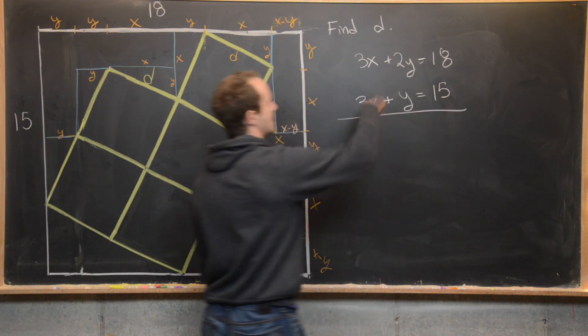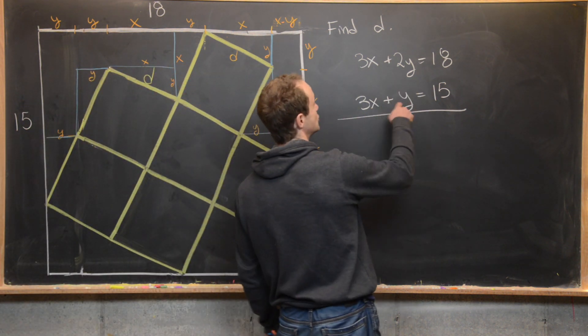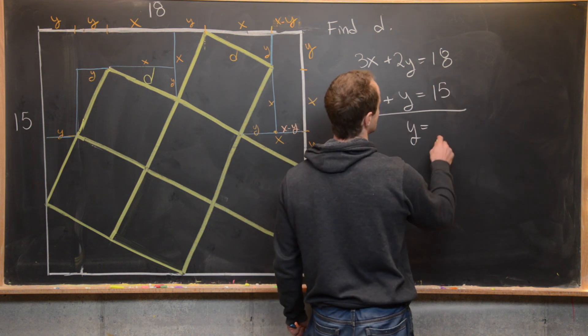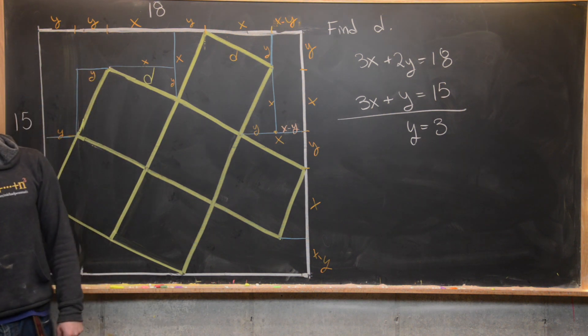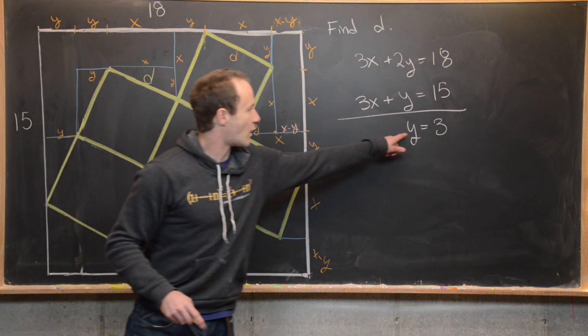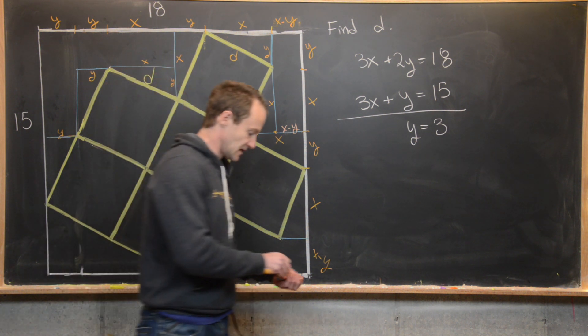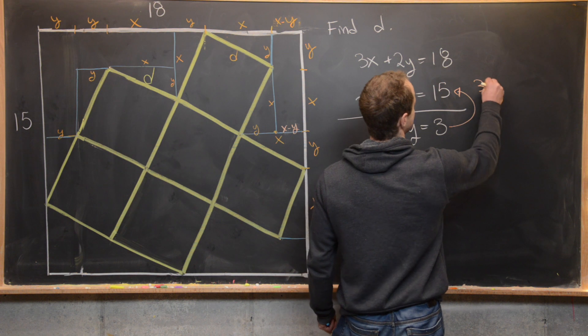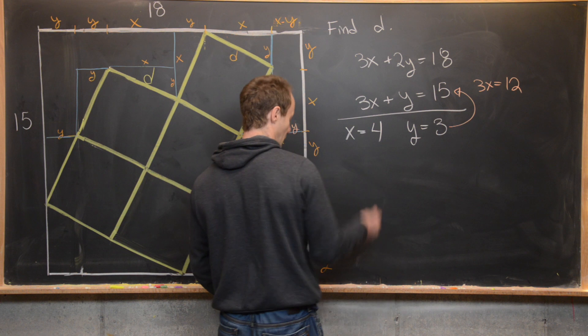So we can maybe subtract these two equations. We'll have 3X minus 3X and 2Y minus Y. So that's going to give us Y equals 18 minus 15, which is three. Next, we can plug Y equals three up into either of these equations. Maybe notice if we plug it in up here, that's going to give us three X equals 12, which tells us that X equals four.